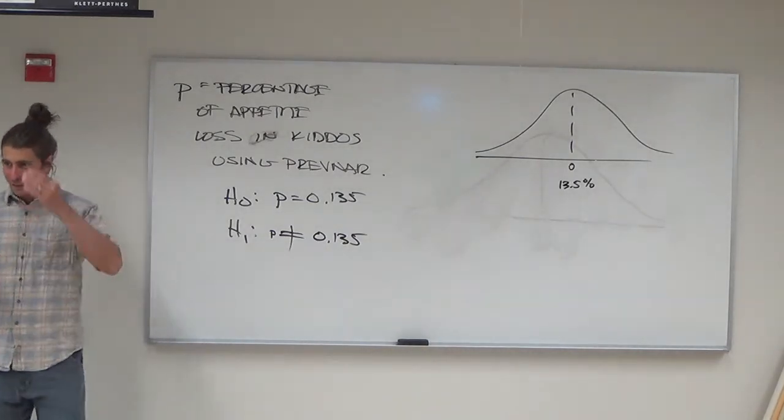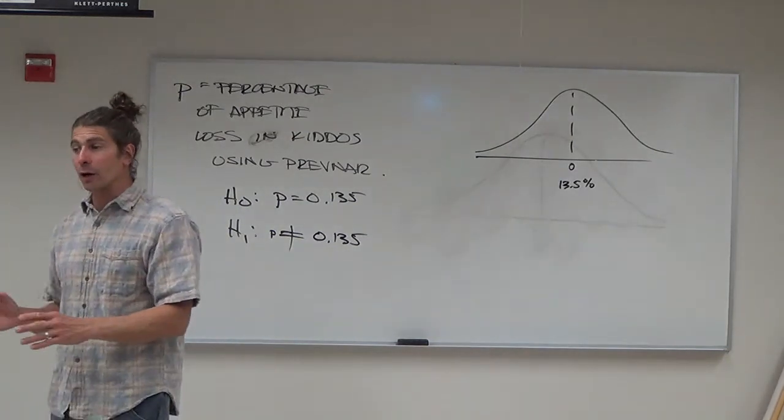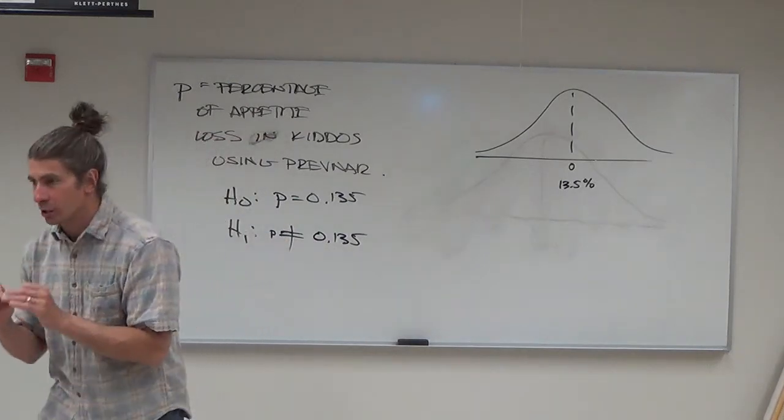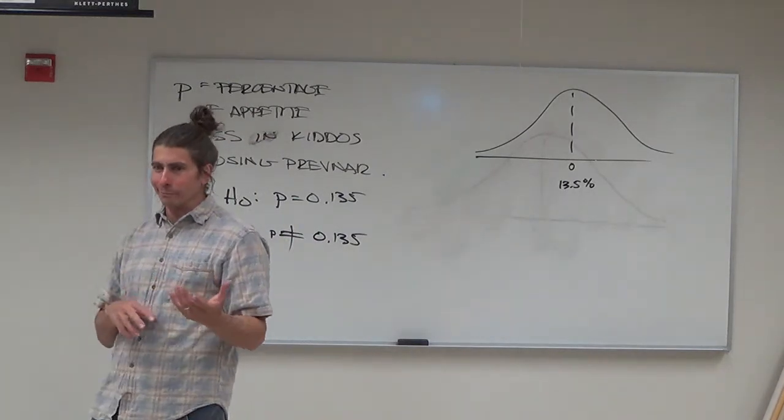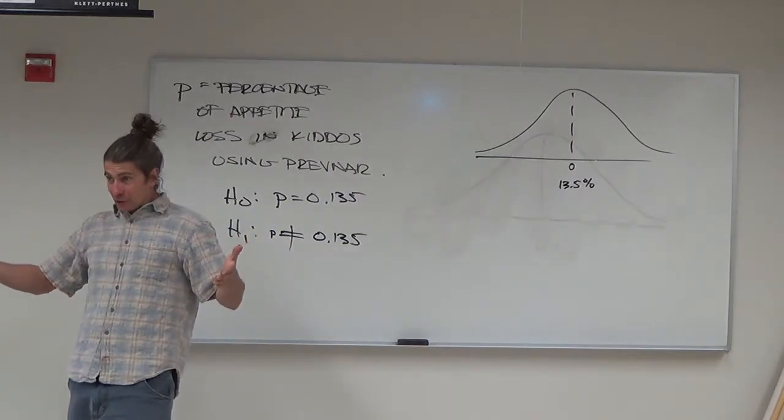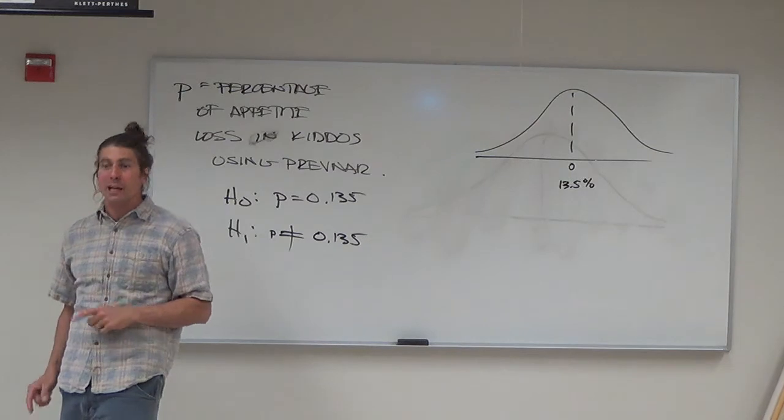A student asks if the null is correct, will they get exactly 0.135? The instructor says not necessarily - that's sampling error. It might be 13.9% or 12.8%, which could be close enough within the sampling error. The test shows you where the sampling error is, basically in graphical form.